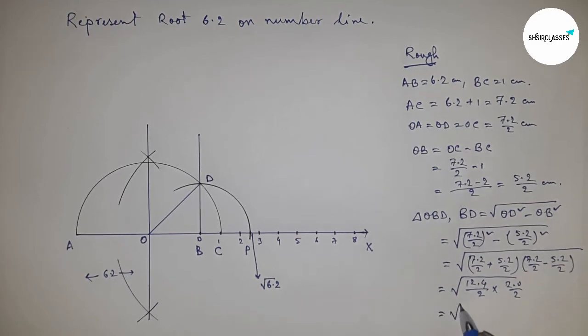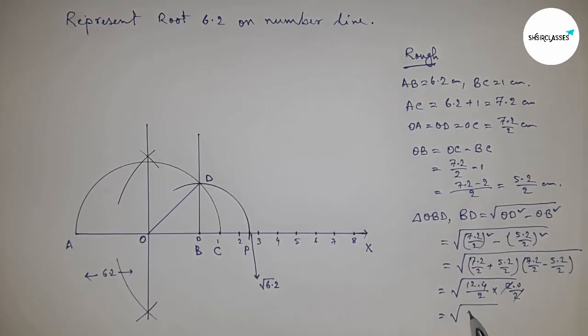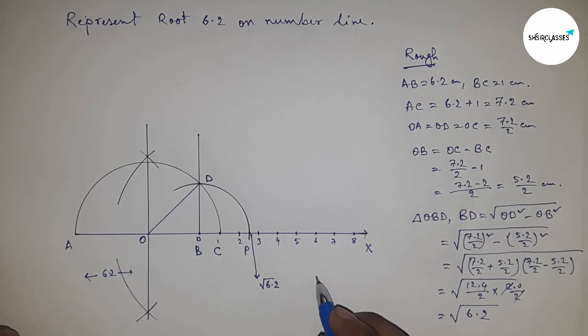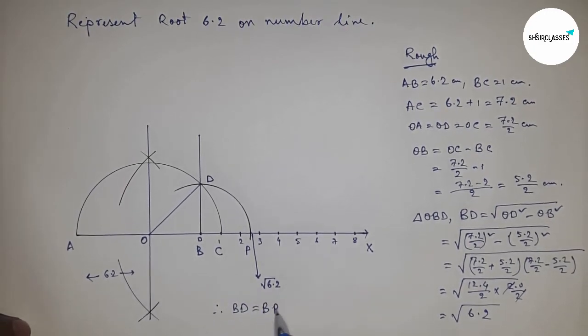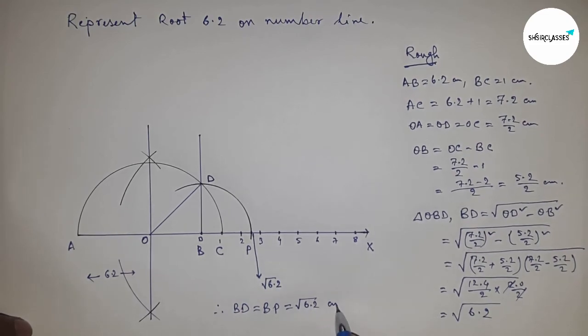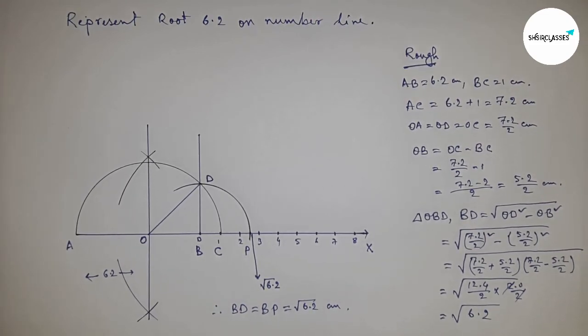This is 6.2. Therefore, BD equal to BE equal to root 6.2 centimeter. That's all. Thanks for watching. Please subscribe, like, and comment on my video. Thanks.